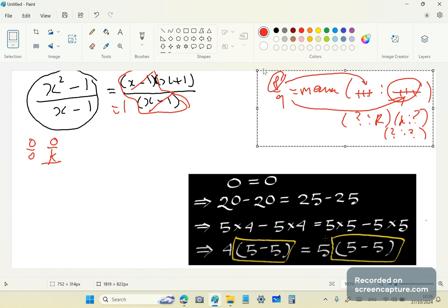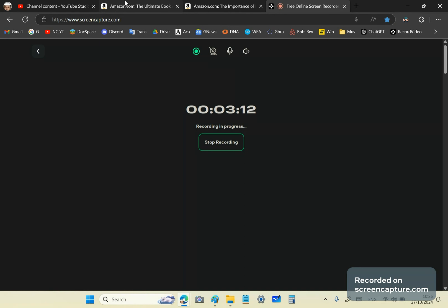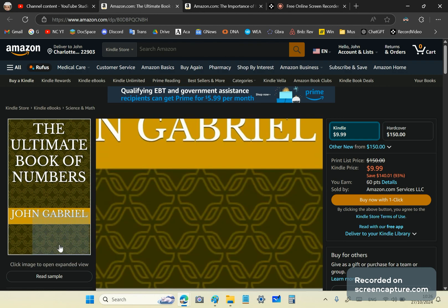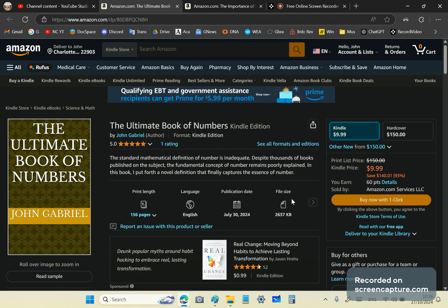So, now, to learn more about that, you need to buy my famous book called The Ultimate Book of Numbers. I'll show you where it is. This book here, you can get it for $9.99 as a Kindle copy, or you can pay $150 for a hardcover copy. And this is the best book ever written on numbers. It will give you everything you need to know about numbers. So, it will make you smarter than the smartest math professor that you think you have.